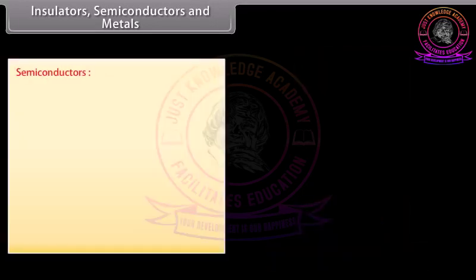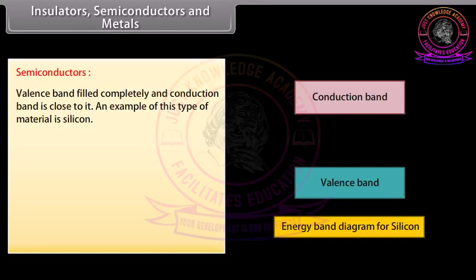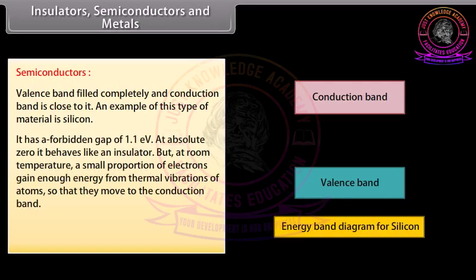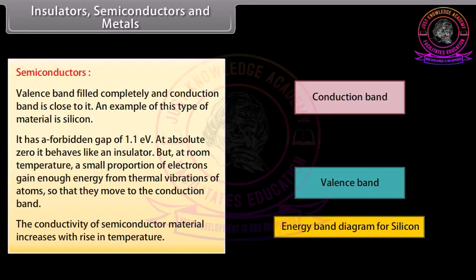Semiconductors have a completely filled valence band and the conduction band is close to it. An example is silicon, which has a forbidden gap of 1.1 electron volts. At absolute zero it behaves like an insulator, but at room temperature a small proportion of electrons gain enough energy from thermal vibrations of atoms so that they move to the conduction band. The conductivity of semiconductor material increases with rise in temperature.